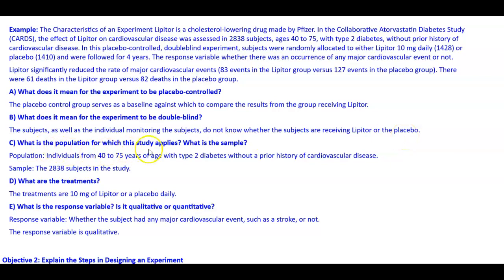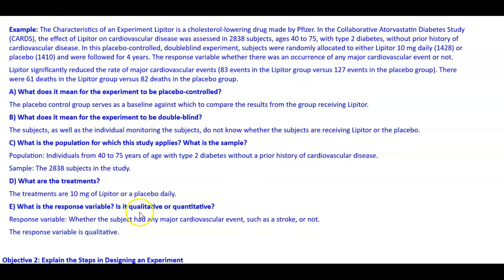Part C: what is the population for which this study applies? The population is individuals from 40 to 75 years of age with type 2 diabetes without a prior history of cardiovascular disease. The sample is the 2,838 subjects in the study. The treatments are 10 mg of Lipitor or a placebo daily. The response variable is whether the subject had any major cardiovascular event such as a stroke or not, and this response variable is qualitative.